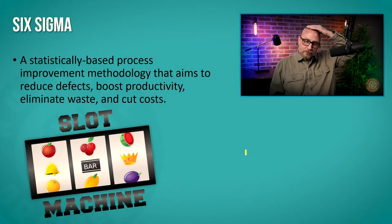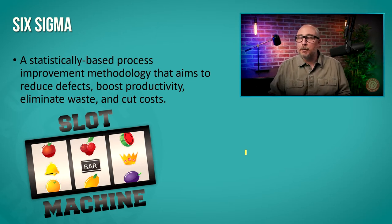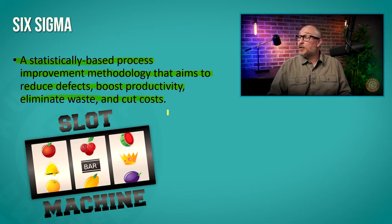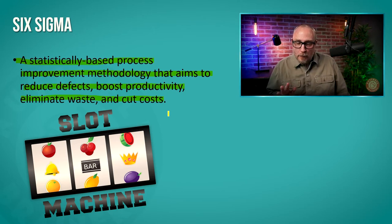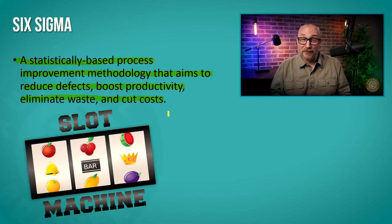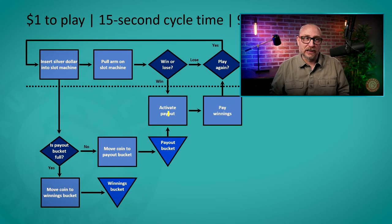So when a company asserts that investing in quality control and increased reliability actually works against us — no, that's not really the case. The more we can control for manufacturing and service costs, the more money we can make. This is all done through a process called Six Sigma. Perhaps you've heard of Six Sigma before. It is a statistically based process improvement methodology that aims to reduce defects, boost productivity, eliminate waste, and cut costs.